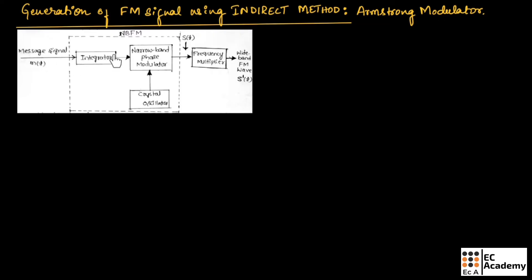Here, the message signal is first integrated and then it is used to phase modulate a carrier signal generated by a crystal oscillator, which will produce a narrow band FM, which is indicated by S(t).